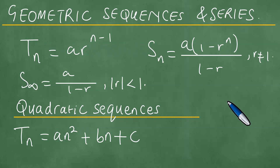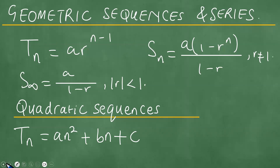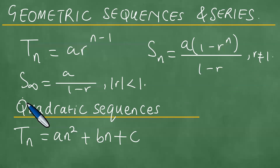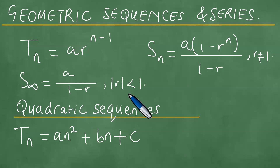We are looking at geometric sequences and series. There are specific formulae we need to focus on: the tn formula, which is a·r^(n-1); the Sn formula, which is a(1 - r^n)/(1 - r), valid when r ≠ 1; the sum to infinity, which is a/(1 - r), where |r| < 1; and the general term for quadratic sequences, tn = an² + bn + c.